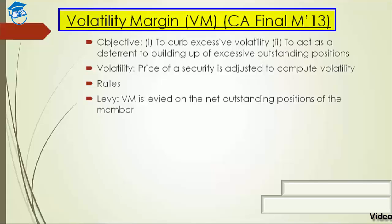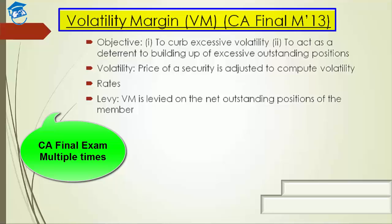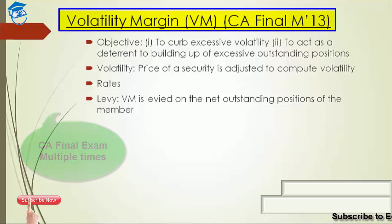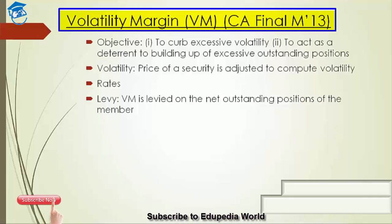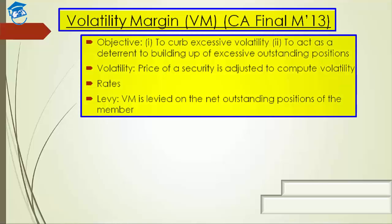Volatility margin is a question that has been asked multiple times. The CA final examination for May 2013 also included this question. So why volatility margin? Volatility, by the name, suggests excessive fluctuation. Something is volatile, something is not volatile. Basically, in order to curb excessive fluctuations and excessive volatility in the market, this margin is being asked for — and to act as a deterrent to the build-up of excessive outstanding positions.